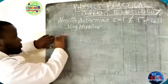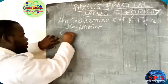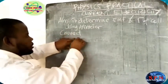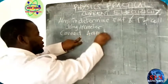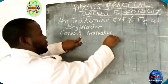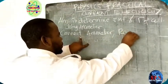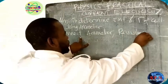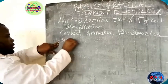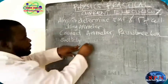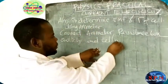You are supposed to know the procedure: that means you connect the ammeter, then the resistance box, then the switch — and these are all connected in series.